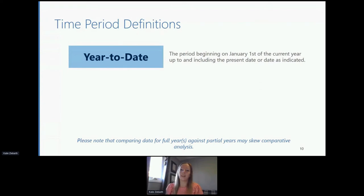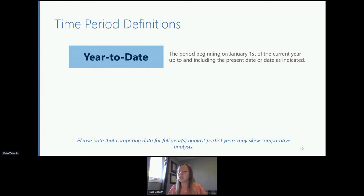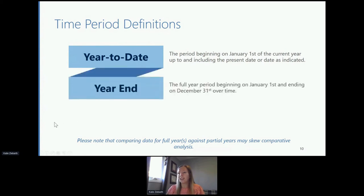The first time period is year-to-date, which is January 1st of the current year up to and including the present date. The same time period may be applied across multiple years to determine trends over time. Some of our dashboards that are year-to-date are updated every Monday, so in that case year-to-date runs to the prior Sunday. The next time frame is year-end, which refers to the full year period from January 1st to December 31st, typically covering about five to six years.